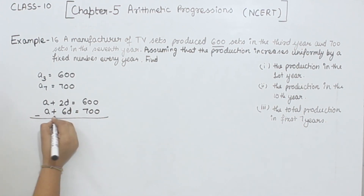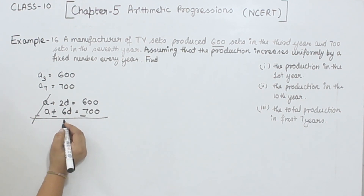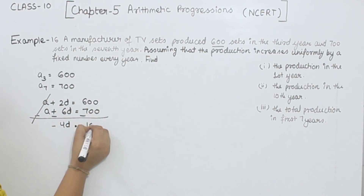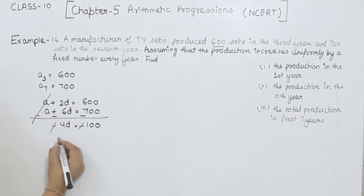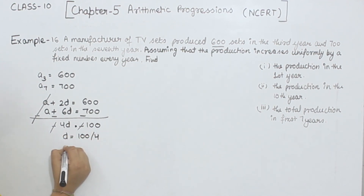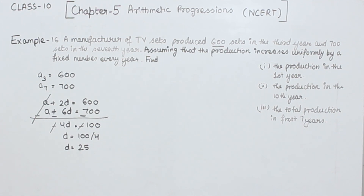Now if we subtract equation 1 from equation 2, the 'a' terms cancel. We get minus 4d = minus 100, so minus cancels minus, giving d = 100 divided by 4, which equals 25. So the common difference d is equal to 25.